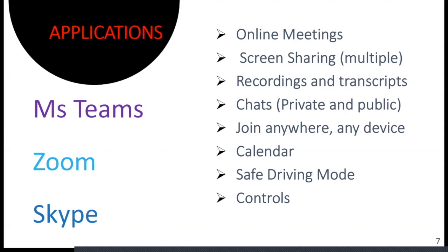The top three online meeting tools are MS Teams, Zoom, and Skype. Most of them have similar features, although MS Teams has some features Zoom doesn't have, and Zoom has some features MS Teams doesn't have. All of them have online meetings, screen sharing, and multiple screen sharing. Zoom has an advantage because you can control who shares among participants and the host, and you can also pass the host role to other participants.